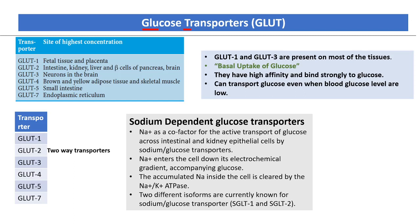These GLUT transporters are present on almost all cell types and come in different isoforms: GLUT1, GLUT2, GLUT3, GLUT4, GLUT5, and GLUT7. These transporters are essentially channels through which glucose can be transported inside the cell, making the cell more permeable to glucose — which is otherwise impermeable because glucose is hydrophilic.